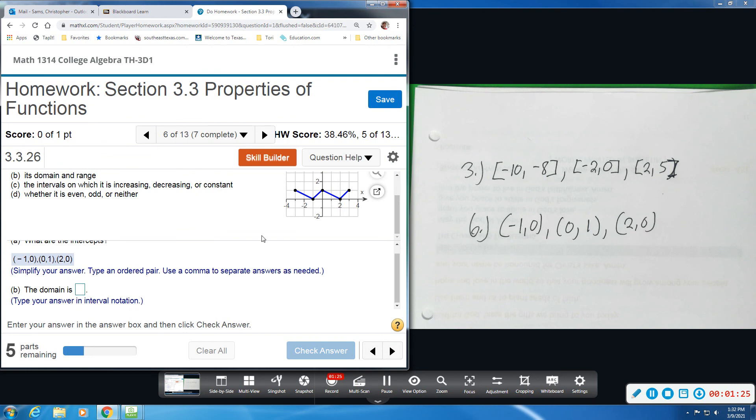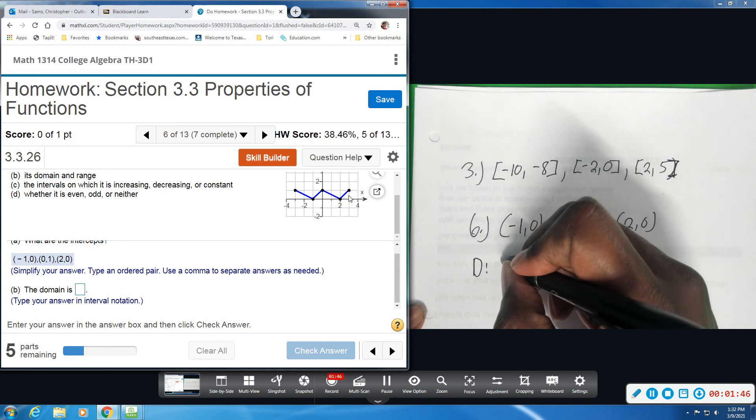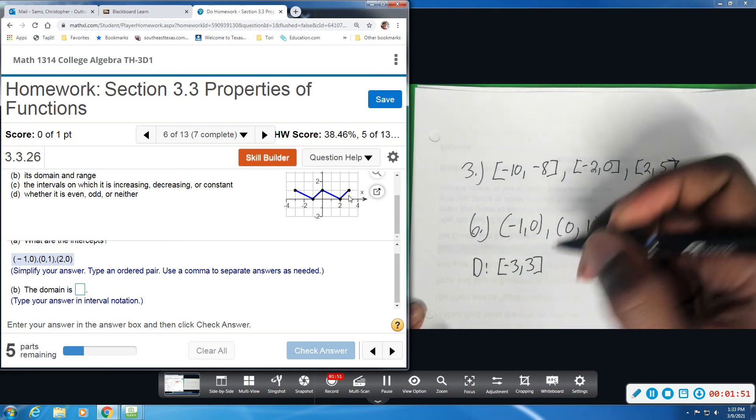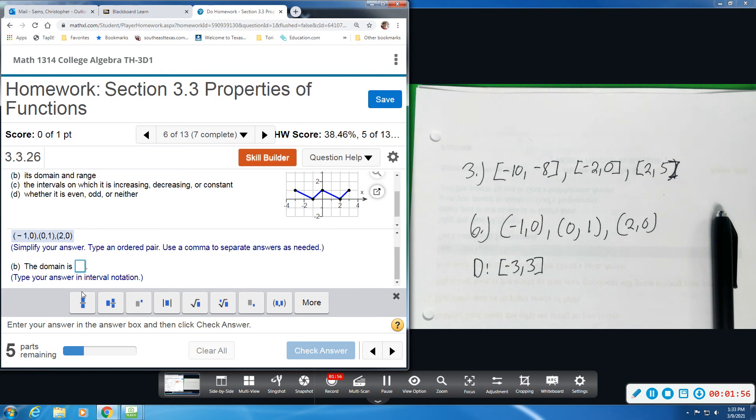All right, now we want the domain. So this graph goes in the left direction as far as this looks like negative three, and that point is included, and it goes all the way to the right and stops at positive three. So we can see our domain stretches from negative three to positive three, including those endpoints. So we're going to have square bracket, negative three, up to positive three, closed square bracket.